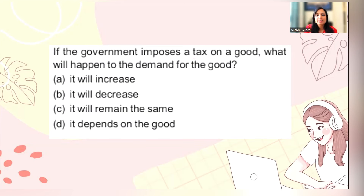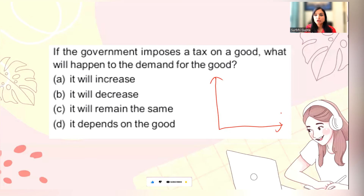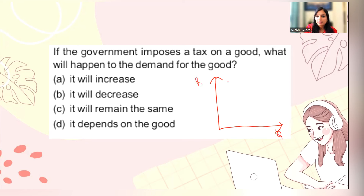Next: if the government imposes a tax on a good, what will happen to the demand for that good? Let's say I love eating ice cream. This is quantity, this is price, and this is the demand curve. The government has imposed a tax, making ice cream more expensive.